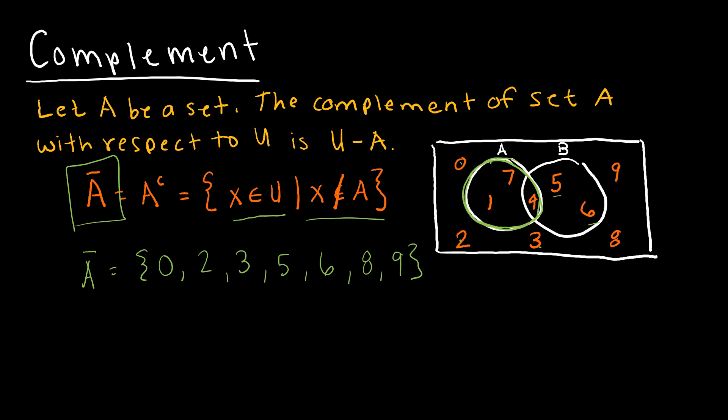So not A would be 0, 2, 3, 5, 6, 8, 9. Let's say I wanted not B. Again, that's all the digits from 0 to 9, but I couldn't include 4, 5, 6. So it would be 0, 1, 2, 3, 4, 5, 6 are all inside B, so 7, 8, 9. Those are all of the not B.